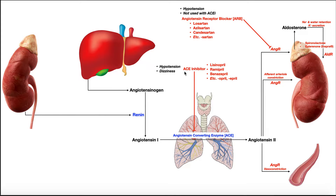The first drugs we'll look at are the ACE inhibitors. Recall that in this pathway we have an enzyme in the lungs called angiotensin converting enzyme, or ACE, which is responsible for the conversion of angiotensin 1 into its active form, angiotensin 2. ACE inhibitors inhibit this enzyme, so if you're inhibiting ACE, you're not going to have conversion of angiotensin 1 into angiotensin 2. These drugs decrease the amounts of angiotensin 2 and therefore also indirectly decrease the levels of aldosterone, because aldosterone is released in response to angiotensin 2. Generally speaking, ACE inhibitors prevent the formation of angiotensin 2.